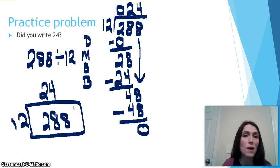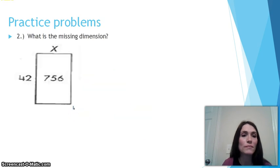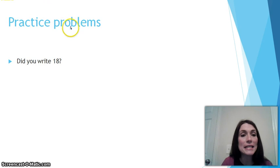Let's take a look at our practice problem number 2. What is the missing dimension? So instead of giving us the problem, we're going to be asked to write it. So if you'll go ahead and write out the division problem and then complete the division using the standard algorithm, press pause, and when you're finished, press play to check your answer with mine.